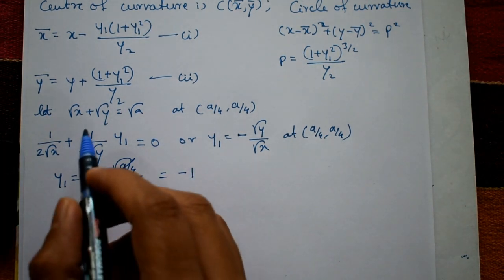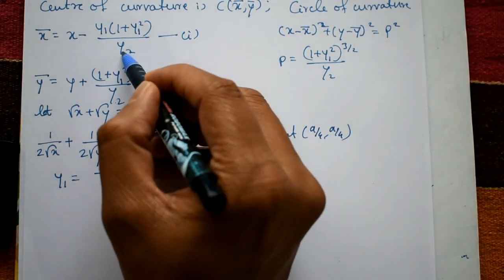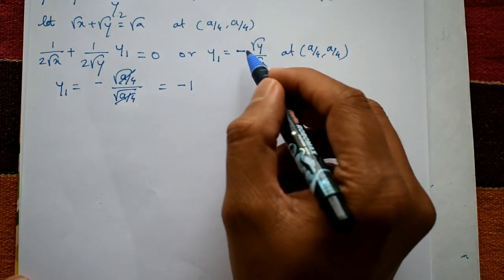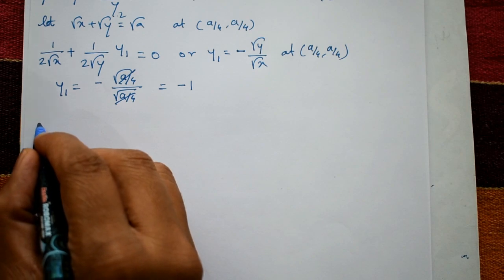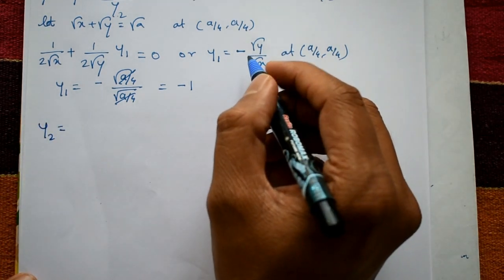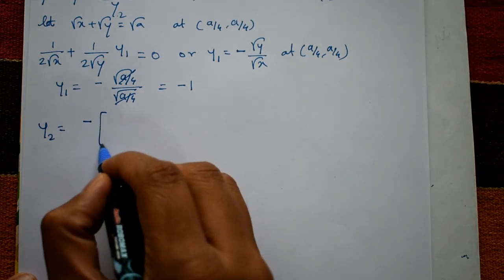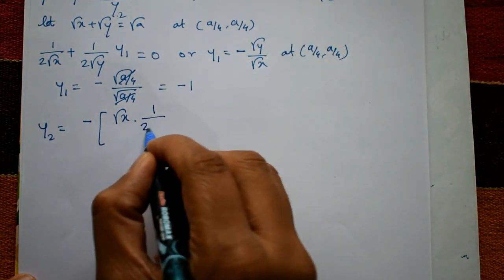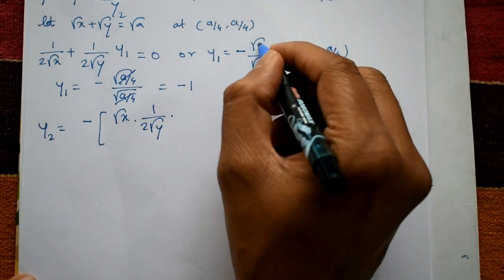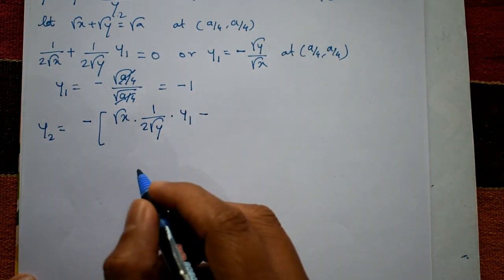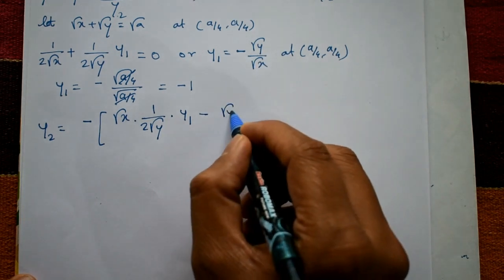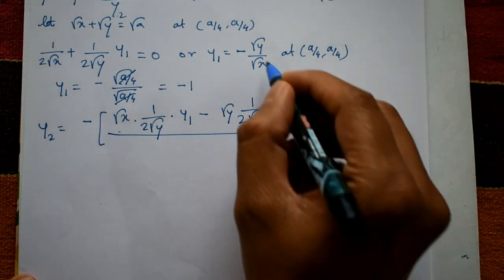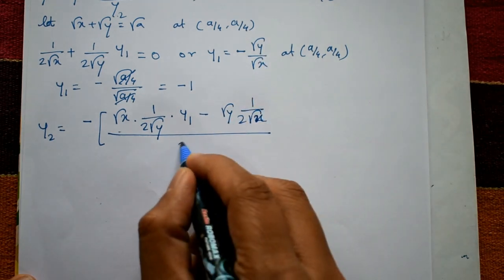y1 = −1. Next we need y2, which requires one more differentiation of y1. Differentiating y1 using the quotient rule: y2 = − [ √x · (1/(2√y)) · y1 − √y · (1/(2√x)) ] / x.